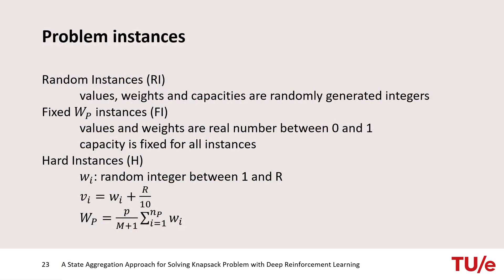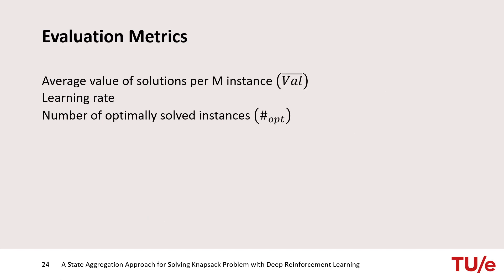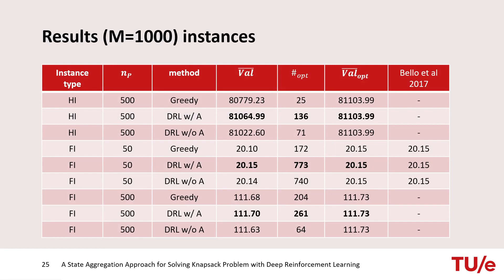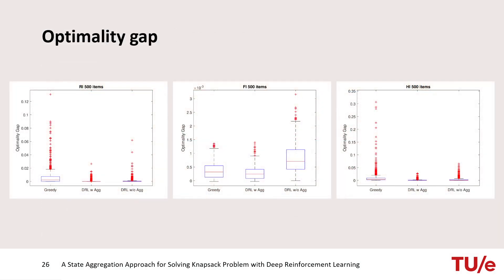Three types of problem instances are considered for evaluation: random instances, fixed capacity instances, and the so-called hard instances, which are proved to be hard in the literature. Two measures for comparing different algorithms are average value of solutions and the number of optimally solved instances. Based on this table, for all instance types and instance sizes, deep reinforcement learning with aggregation works better than deep reinforcement learning without aggregation and also greedy algorithm, and also one work based on pointer network in the literature.